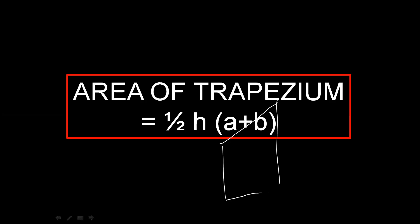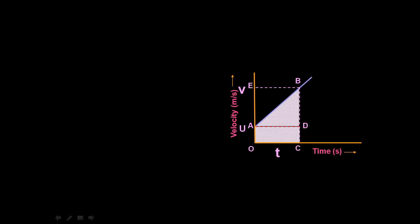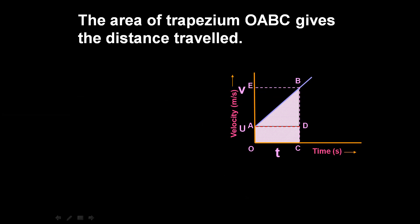We have two parallel sides. The height of the trapezium is identified. The area under the VT graph will give you the displacement or distance traveled. This is uniformly accelerated motion.